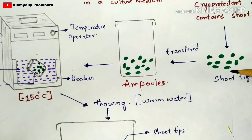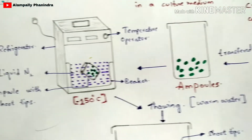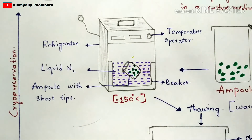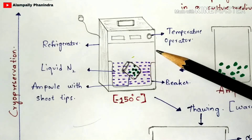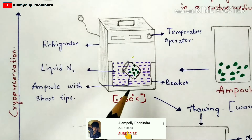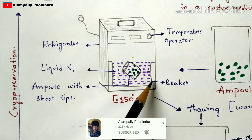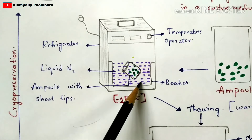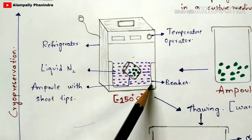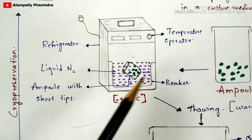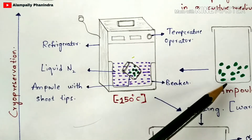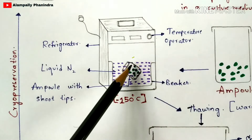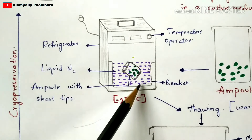In the next step, you extract the shoot tips from the test tube and transfer them into an ampoule. From here, the actual process begins. The refrigerator plays a major and vital role because low temperature must be applied for cryopreservation. You place a beaker inside the refrigerator, and in that beaker you add liquid nitrogen — the purple-colored one in the diagram. Now you transfer this ampoule into the liquid nitrogen present in the beaker. The ampoule contains the shoot tips, which get transferred into the liquid nitrogen.